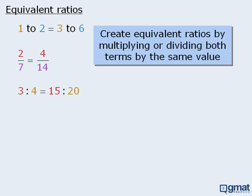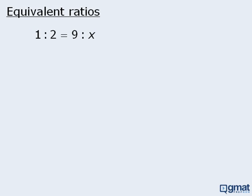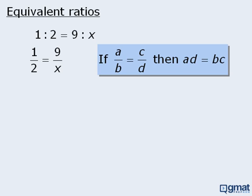A common question type related to equivalent ratios is one where two ratios are equal and we need to solve for some unknown value. To solve this type of question, we first rewrite the equivalent ratios using fraction notation and then apply the cross-multiplication rule. When we cross multiply and simplify the right-hand side, we get x equals 18. So the ratio one to two is equal to the ratio nine to 18.